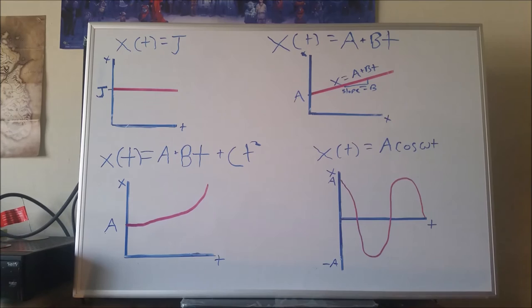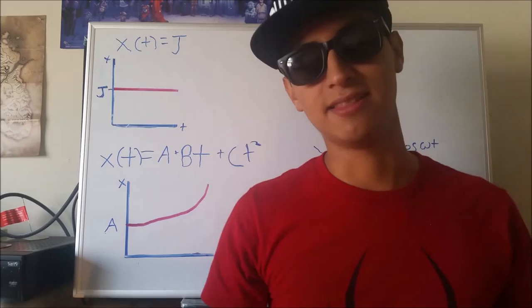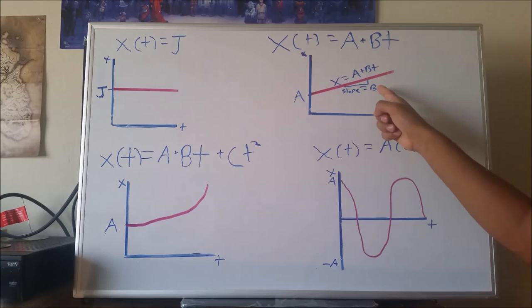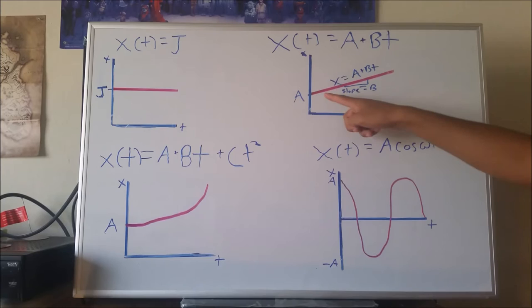This is the graph that represents this form of motion. It is simply a straight line with a slope. From calculus, we know that the slope of any function gives us its rate. In this case, the rate, B, slash slope, is the rate, the velocity.